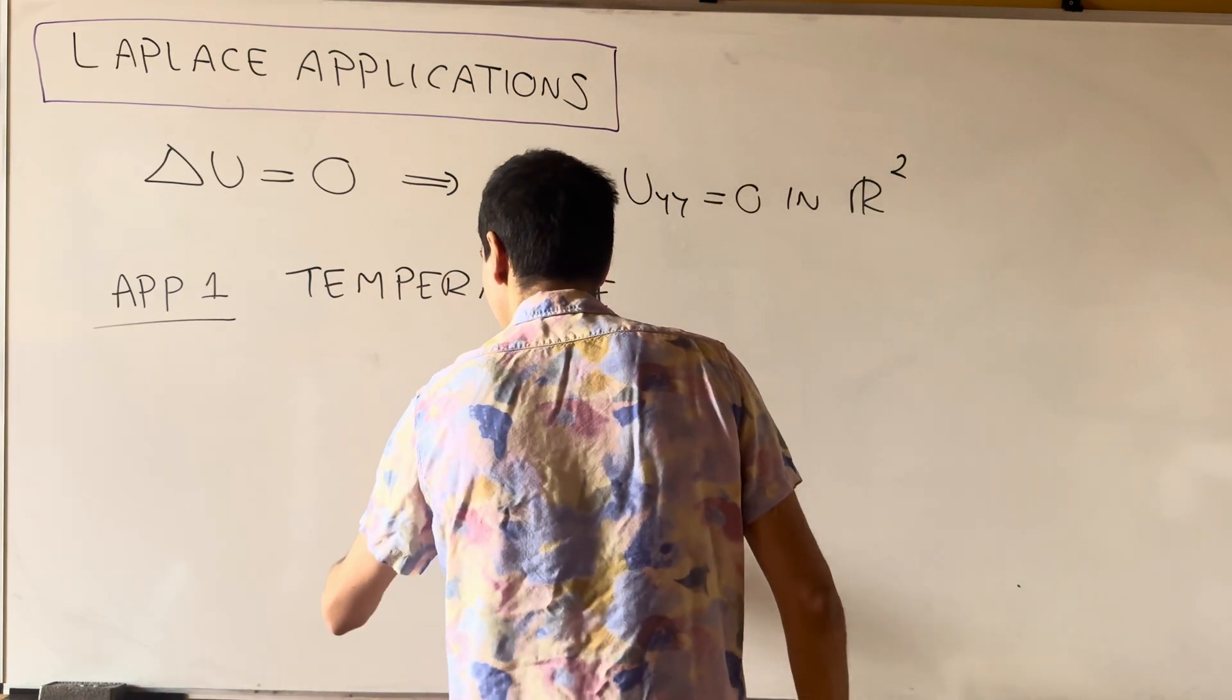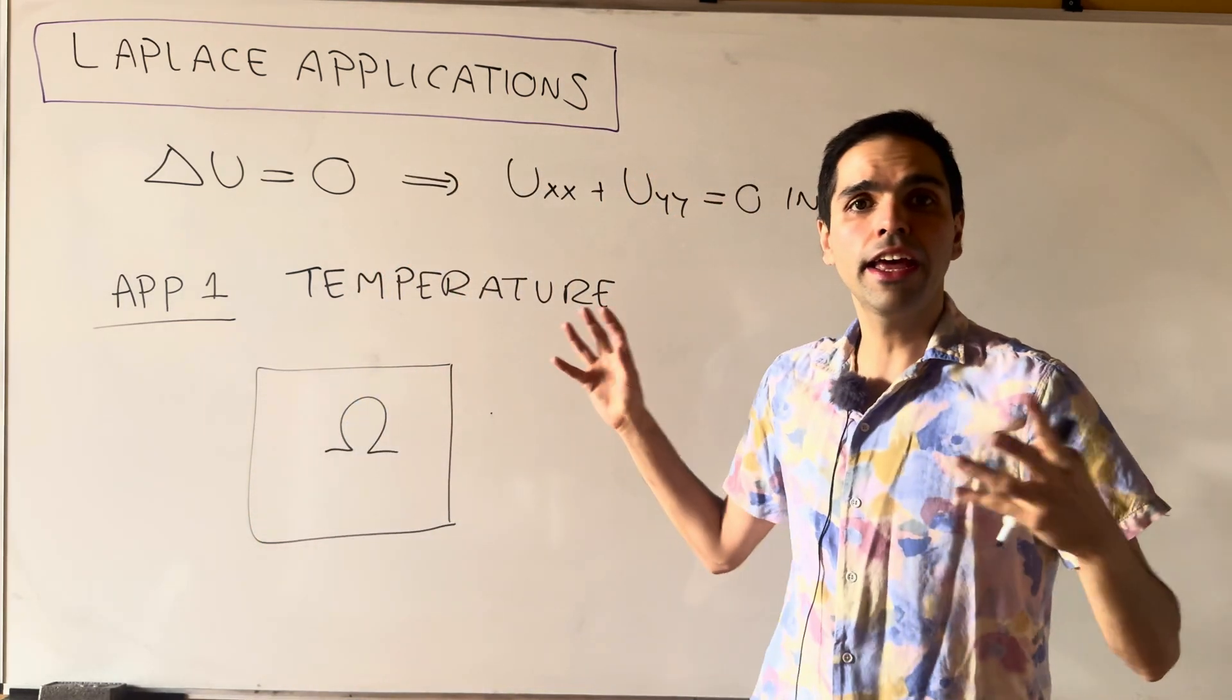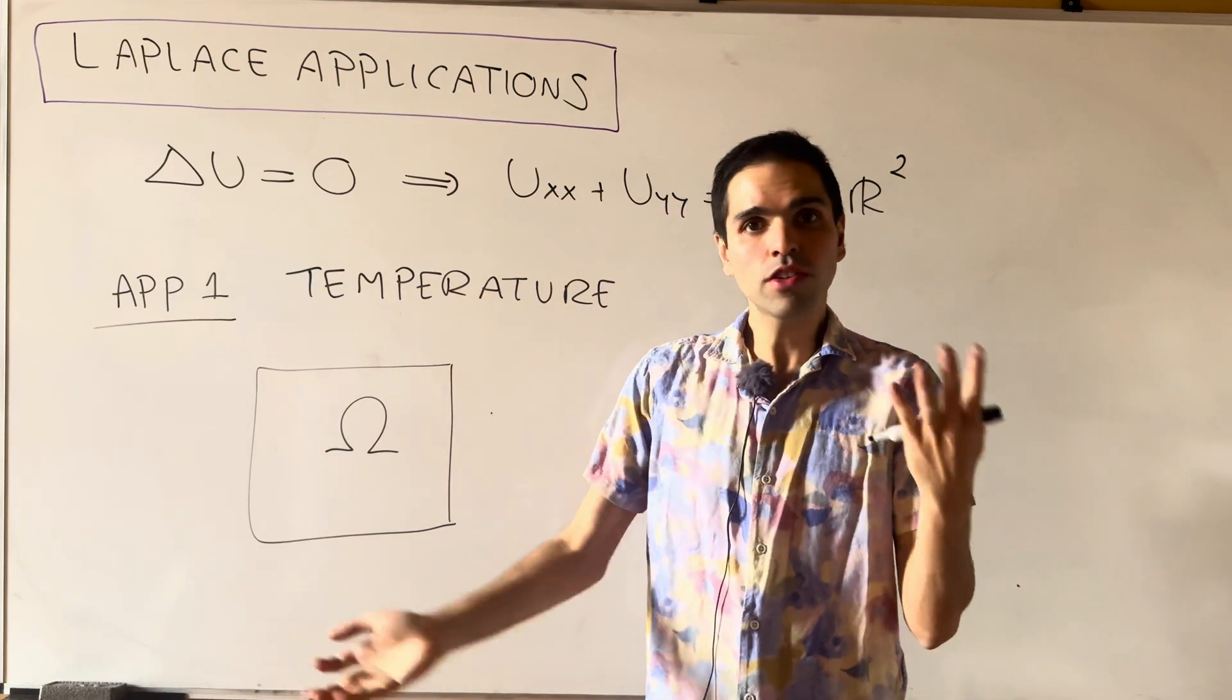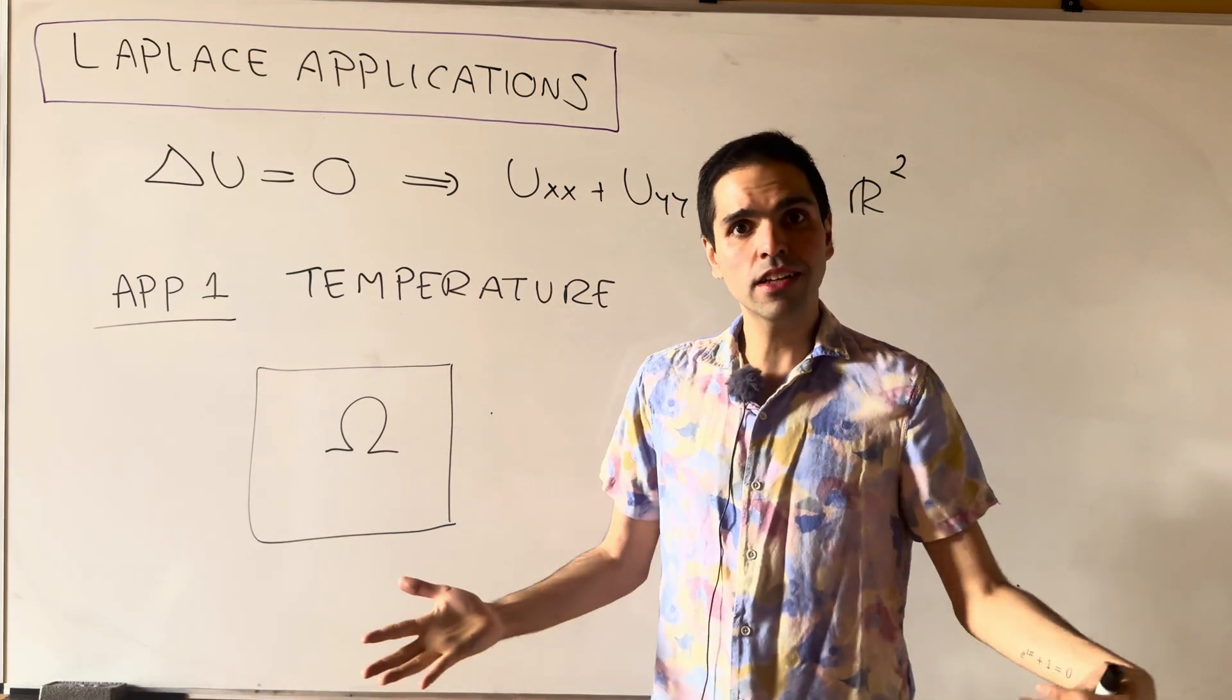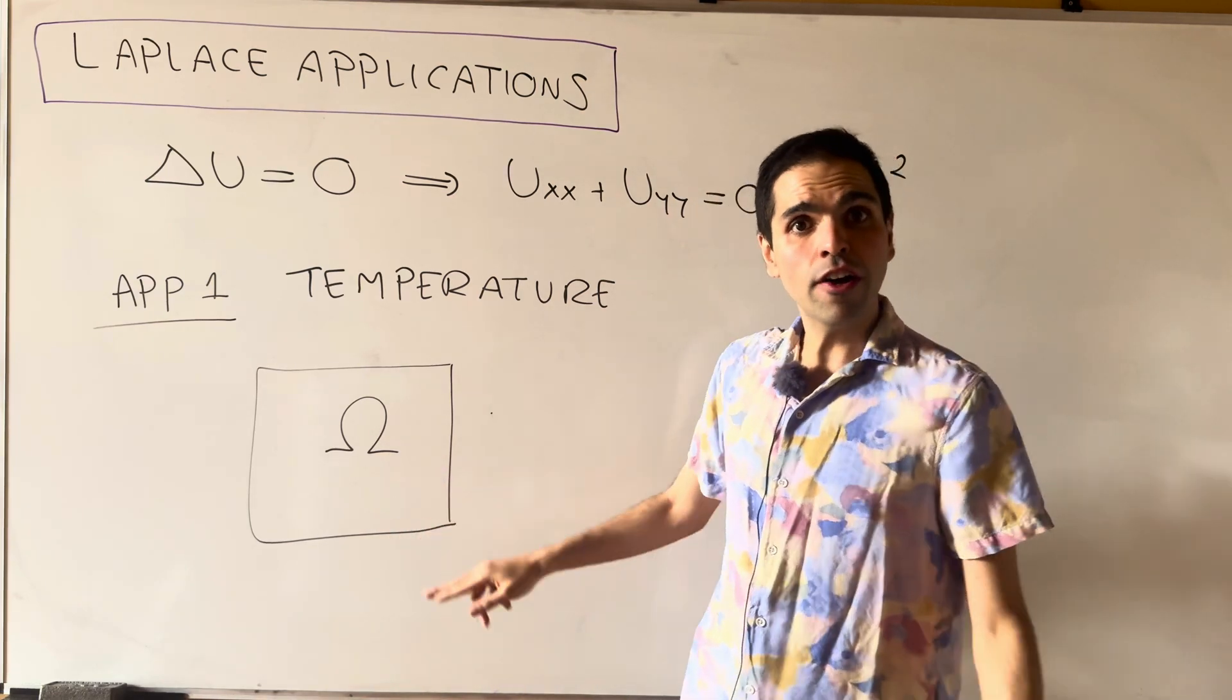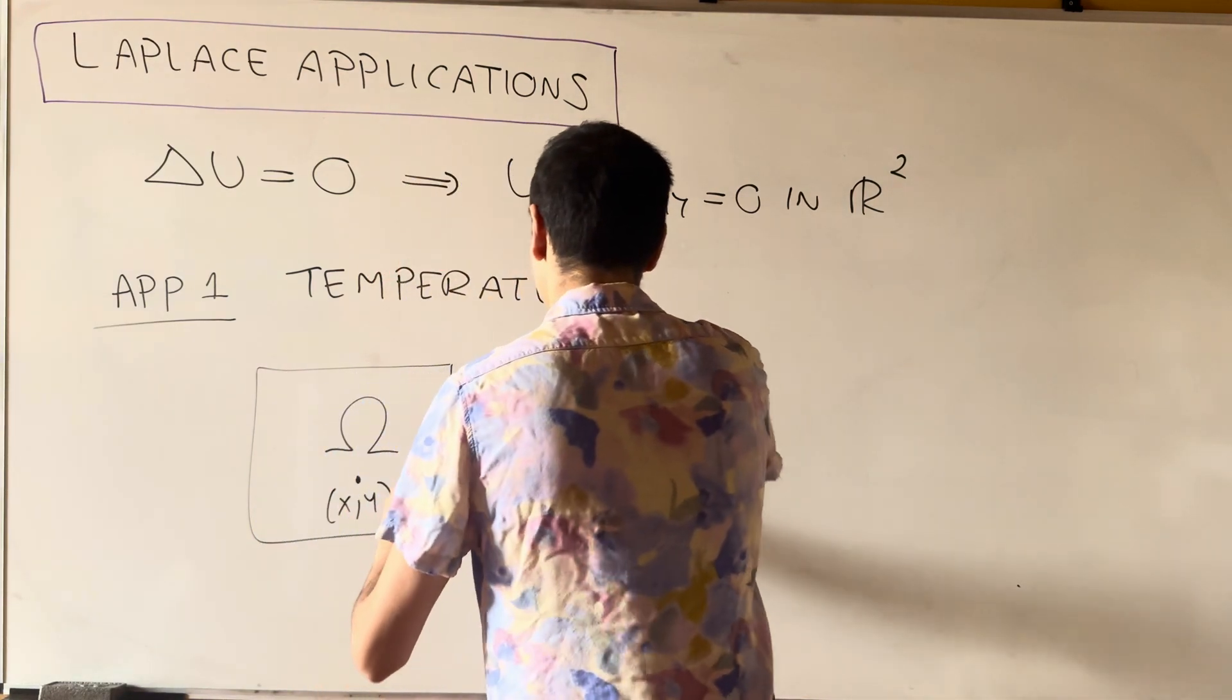Once again, the situation is as follows: if, let's say, you put a cake in the oven, you take it out and wait two hours or so until the temperature is stabilized, then to figure out the temperature of a cake, you just need to solve Laplace's equation.